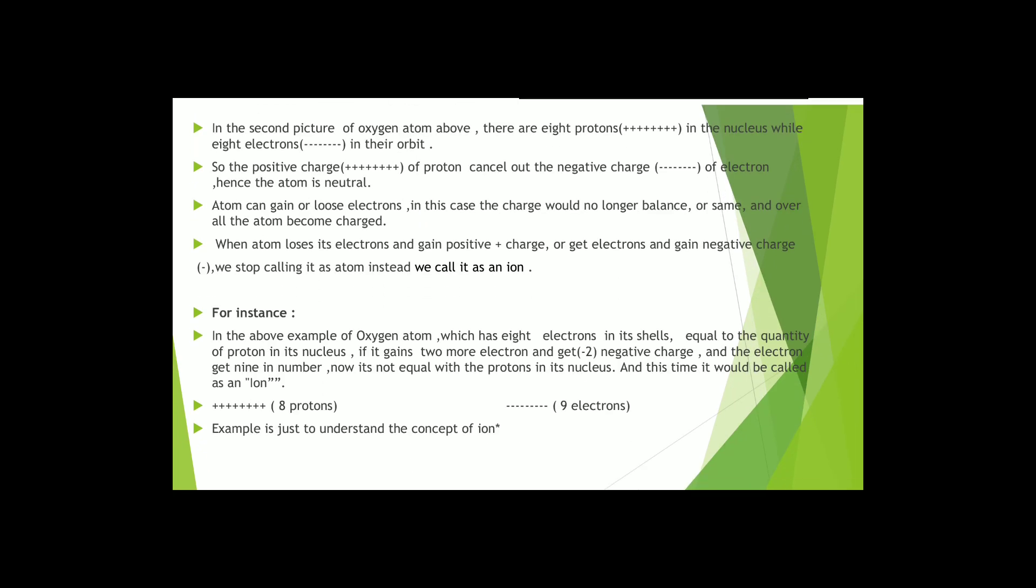In the second picture of oxygen atom, there are 8 positively charged protons in the nucleus and 8 negatively charged electrons in their orbit. So the positively charged proton will cancel out the negatively charged electron. Hence, the atom is neutral.